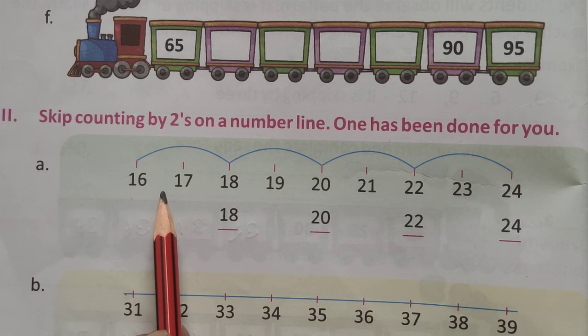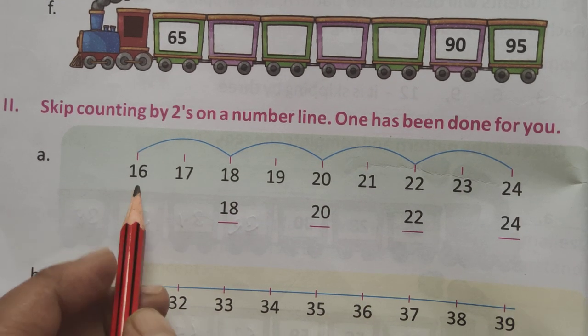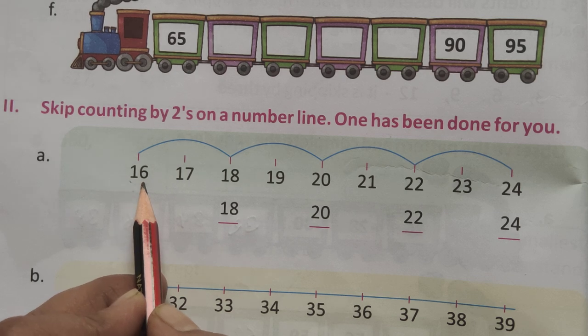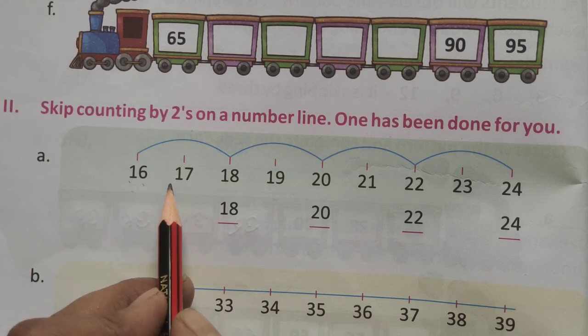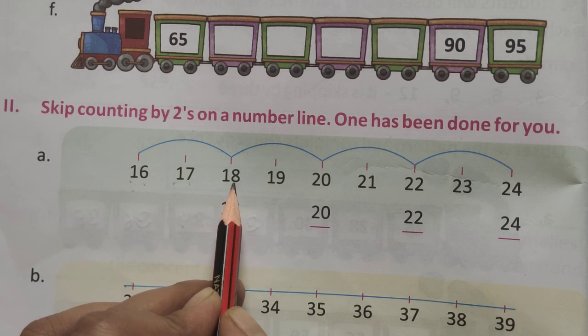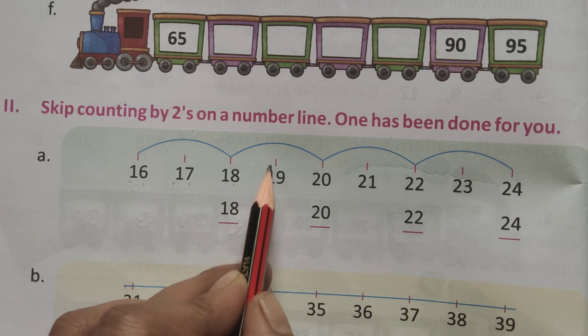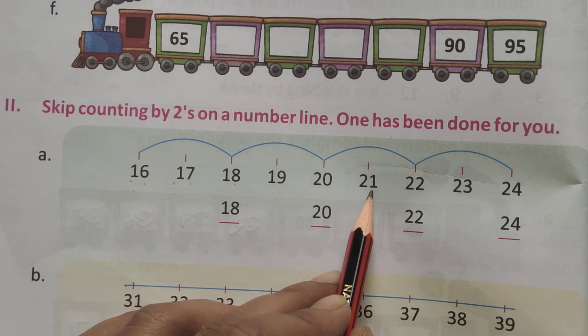Ab, hummye kya karna hai is line mein? Skip 2 karna hai. Dekho, is ne kiaise jump kiya hua hai? 16. By 2 skip, 17, and 18. 19, 20, and 21.